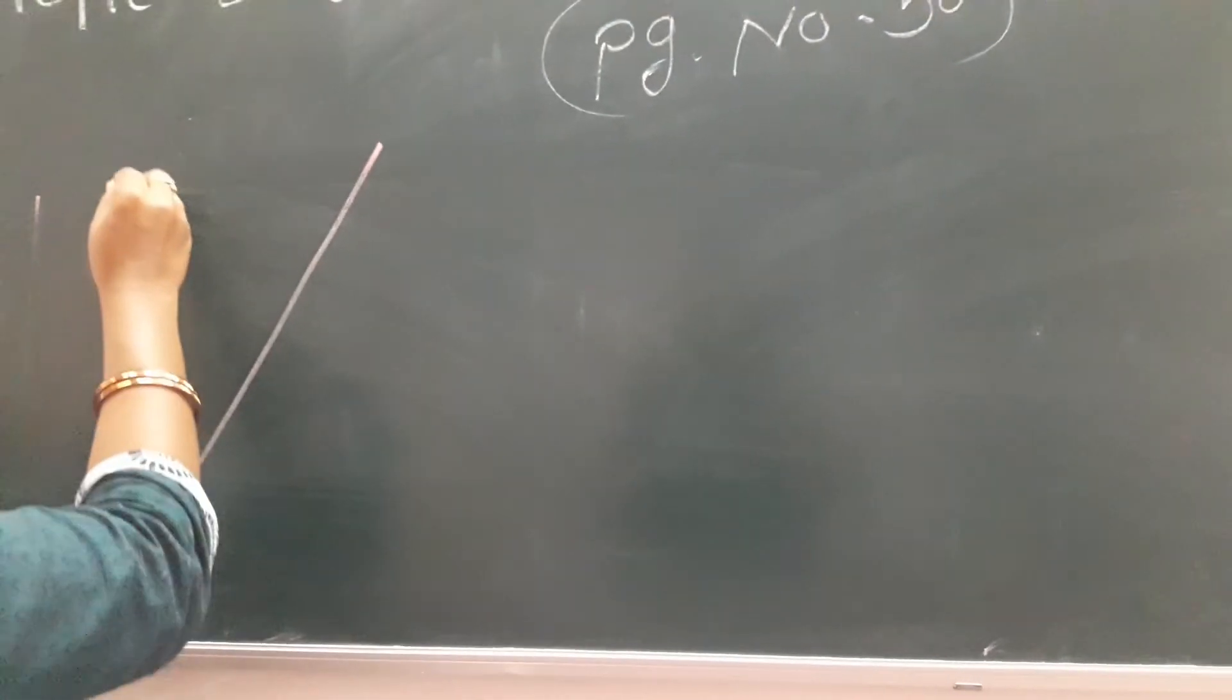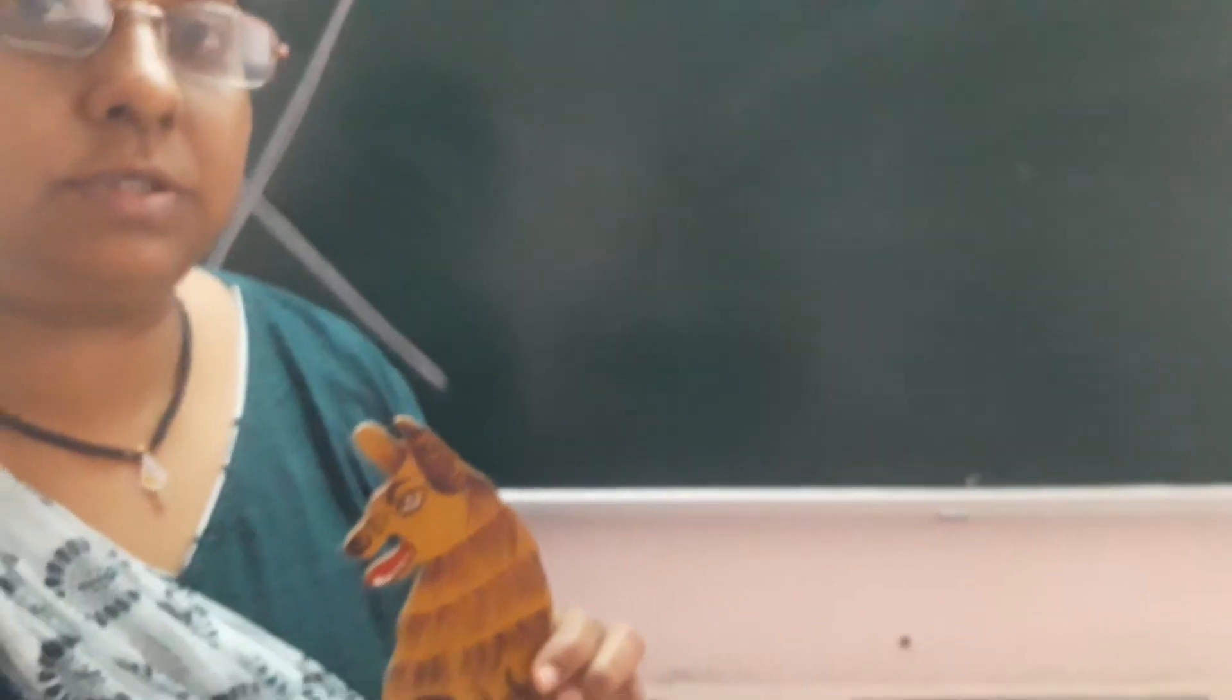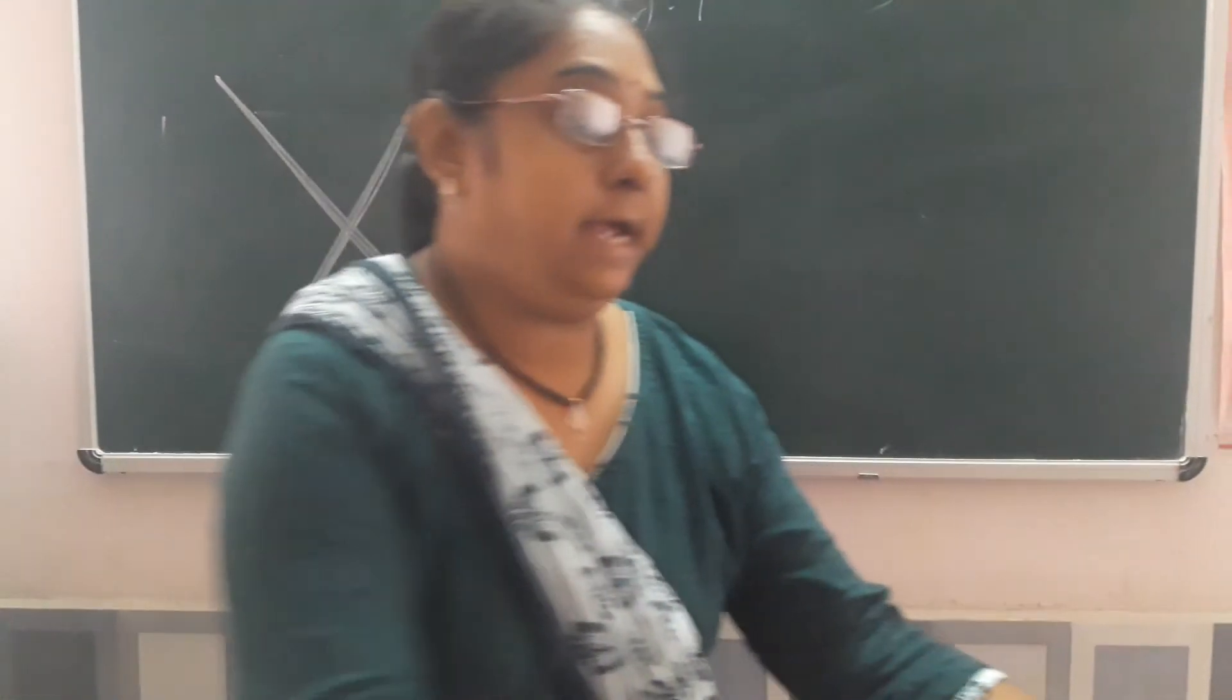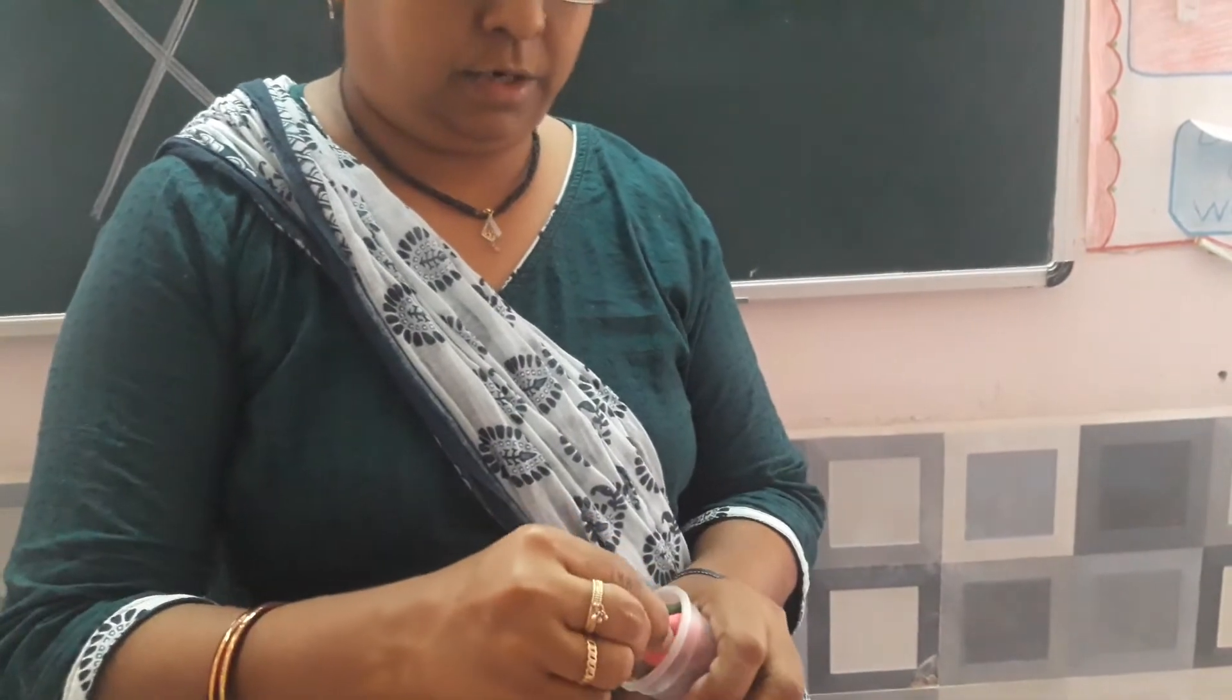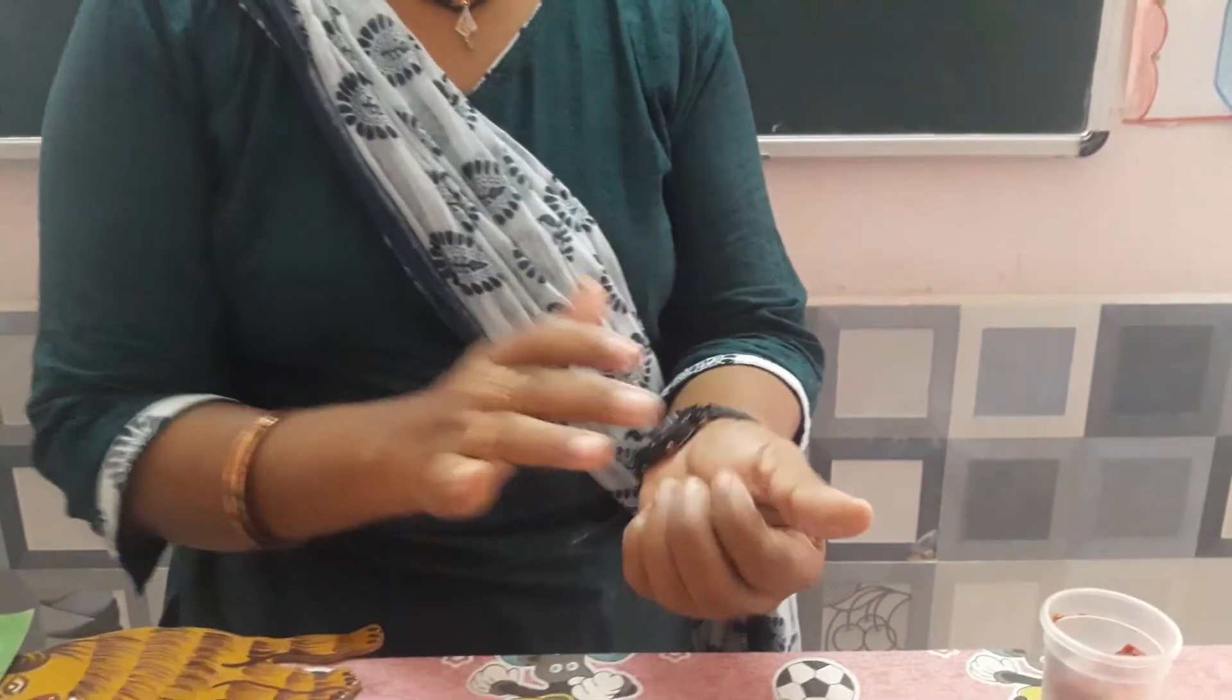Letter X. X is one slanting line and another slanting line from the other side. X for xylophone. X for fox. X sound is cha. This is our today's new letter, Letter X. X for fox. X for ox. X for box. X for mix. When we have clay or colors, we mix them, in that also X comes. X for mix. Okay?